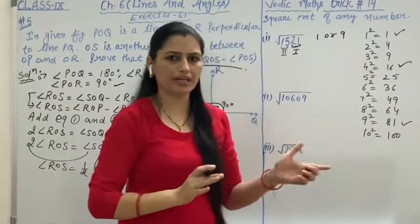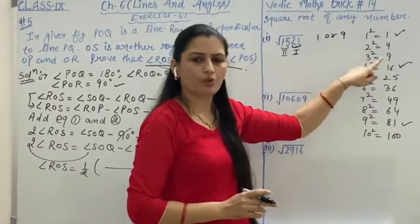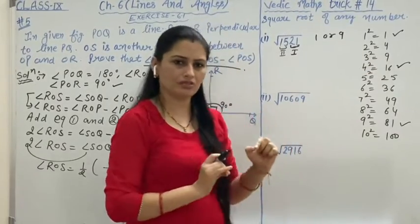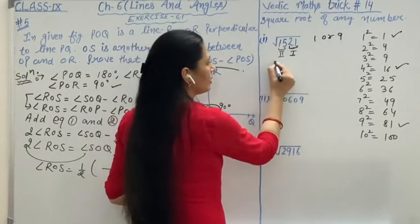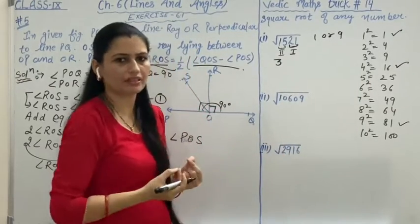So we write here 9. 9 means 3. What is the square root of 9? That means 3. So we write here 3, because below 15 you can only write 9 when you do division.